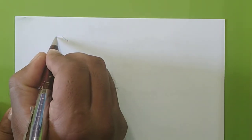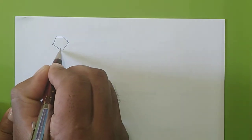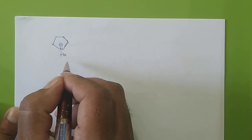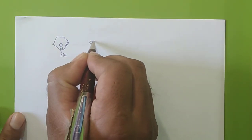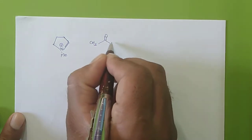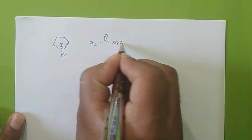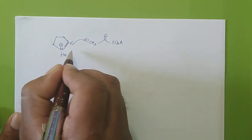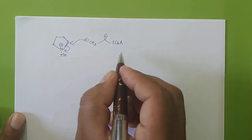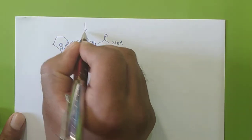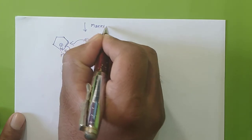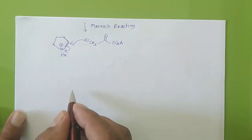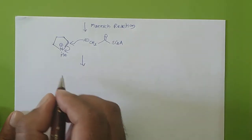So we have the N-methyl pyrolinium cation with a positive charge and a double bond. There will be a reaction with acetyl coenzyme A. The type of reaction is a Mannich-type reaction, and the nucleophile attacks the iminium ion to give a product.